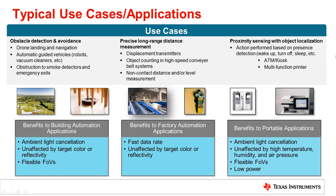Another use case would be for precise distance measurements. Applications in this use case include, but are not limited to, displacement transmitters, object counting and high-speed conveyor belt systems, and non-contact distance and/or level measurements. OPT3101's fast data rate and insensitivity to object color and reflectivity make it well suited for these applications. OPT3101 can also be used for proximity sensing with object localization. Applications using this use case include ATM kiosks, multi-function printers, video doorbells, and more. OPT3101's ability to split the sensing area into up to three different parts lets you know both the distance and direction of the target, allowing you to make informed decisions.